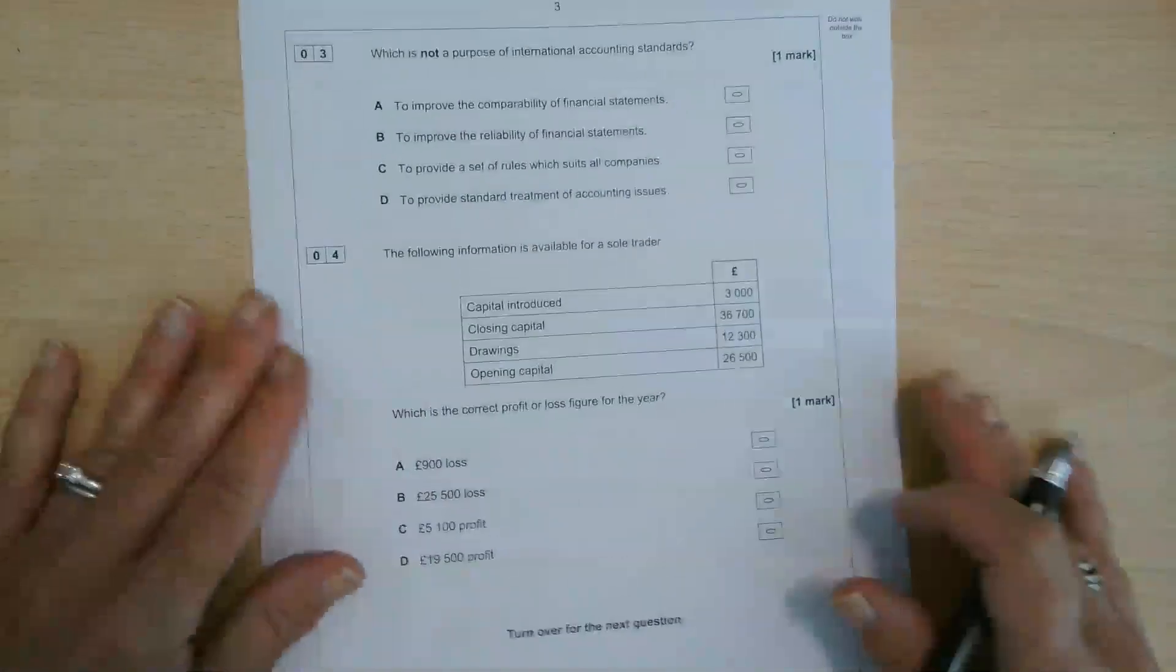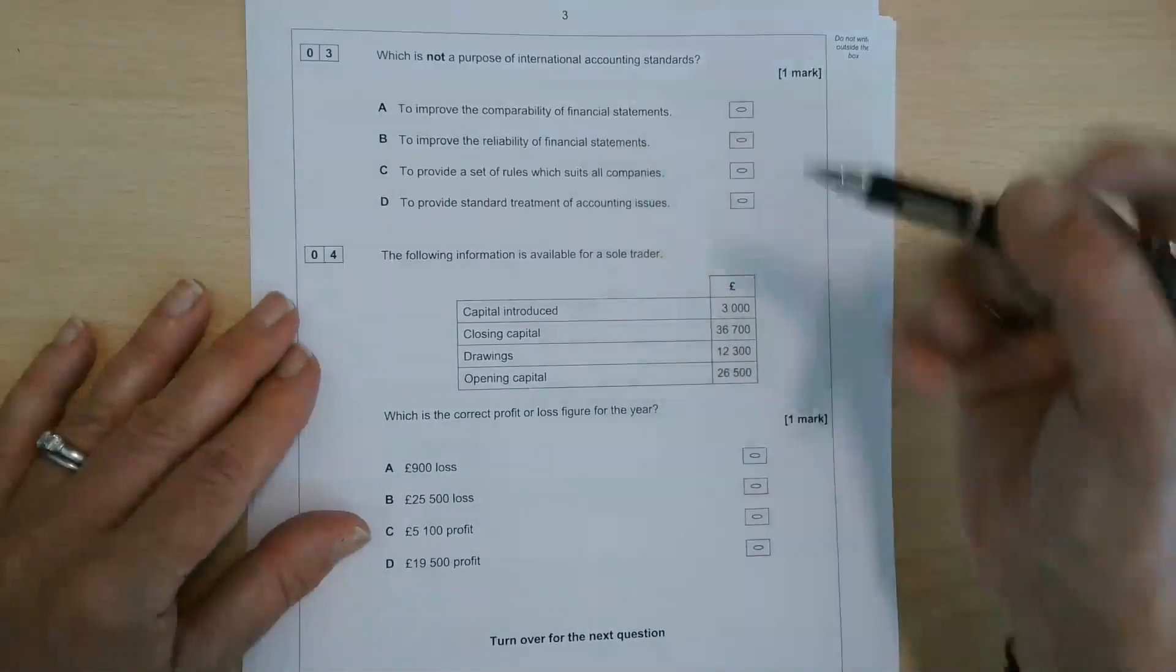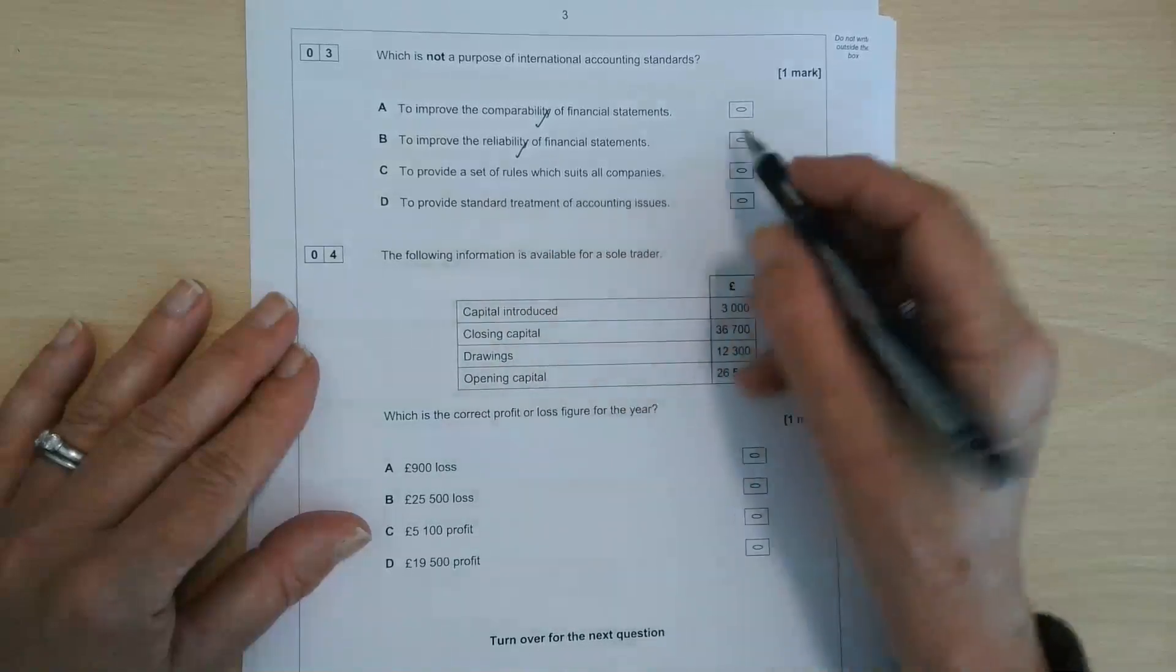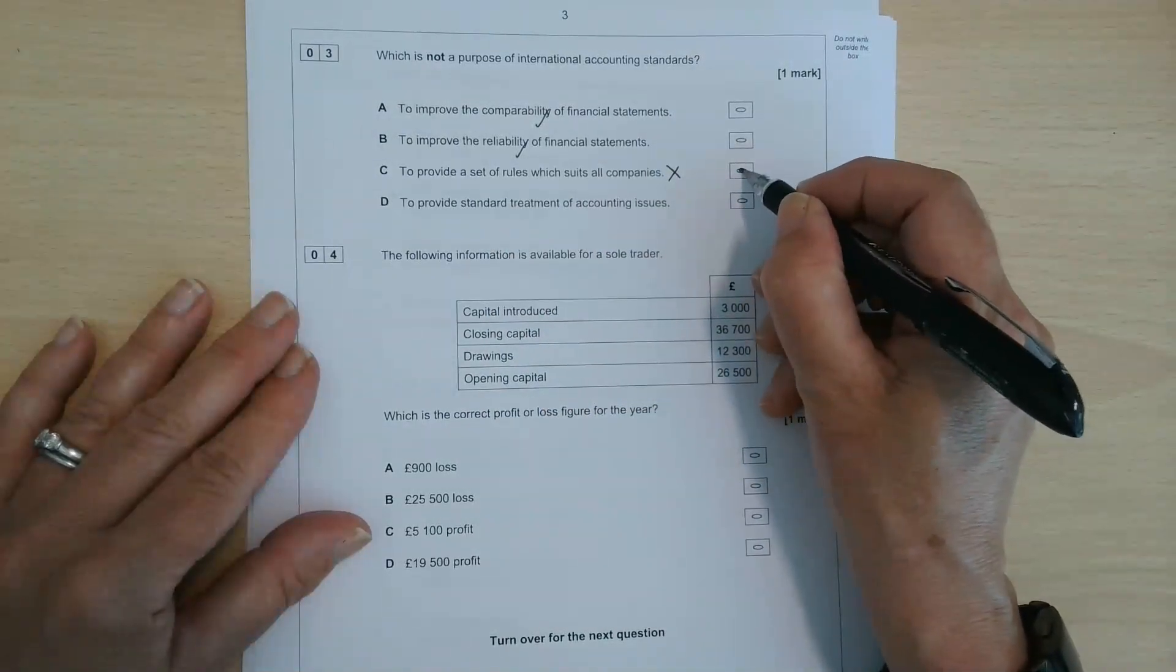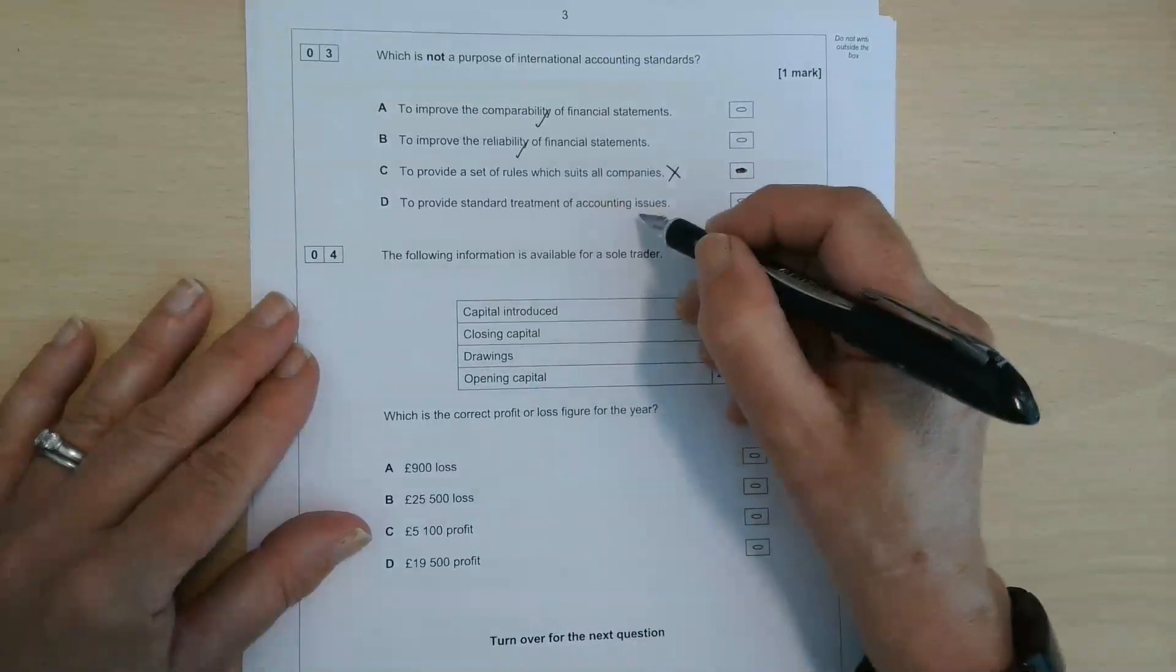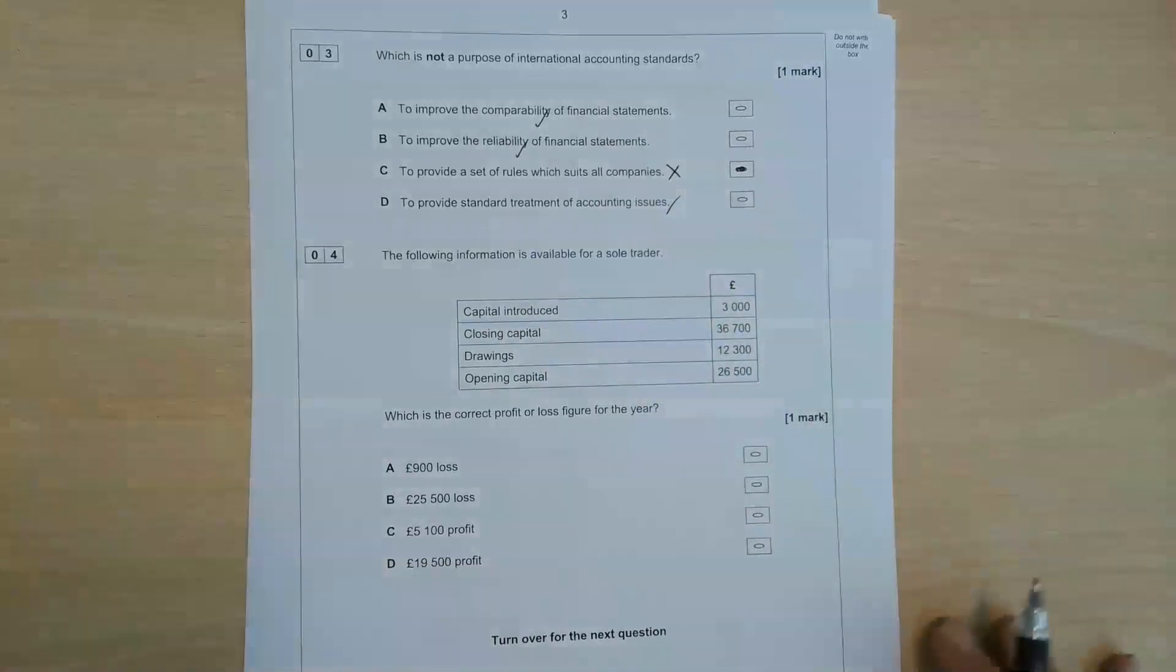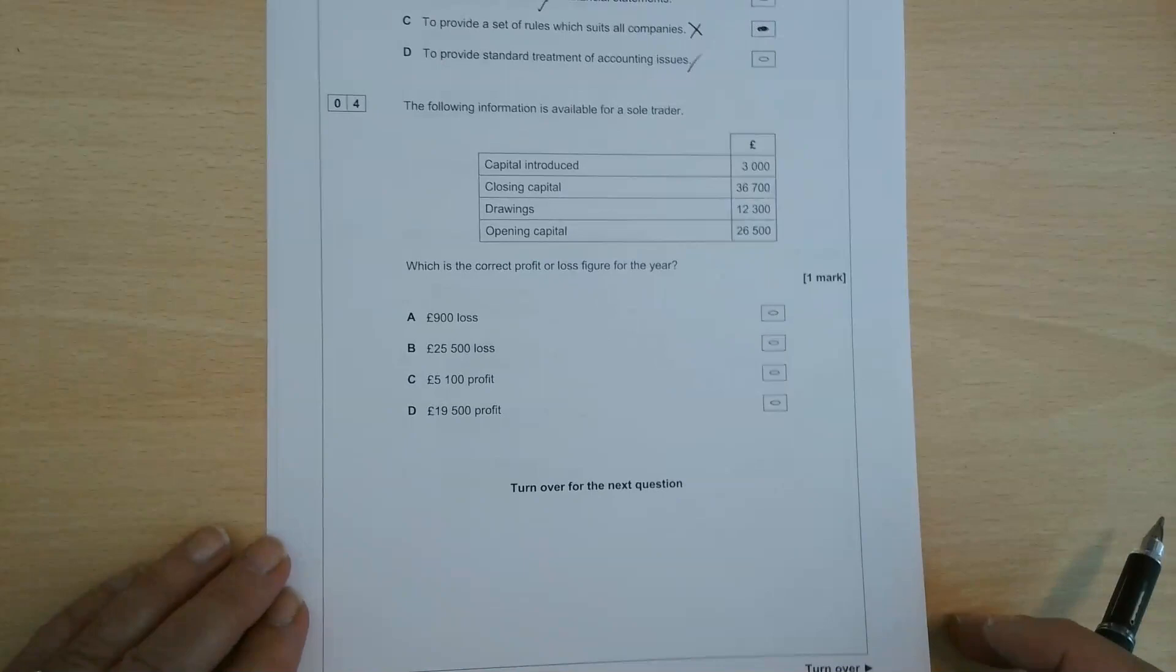Question three, which is not a purpose of international accounting standards? Well, it is to improve the comparability and the reliability of financial statements. It isn't to provide a set of rules which suits all companies. The answer there is definitely going to be C. It is to provide a standard treatment of accounting issues. So it doesn't provide a set of rules. It's not legally obliging. It just gives guidance as to how things should be treated.